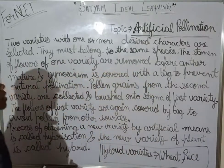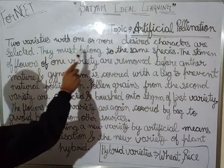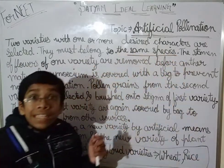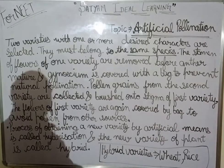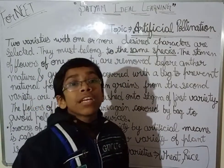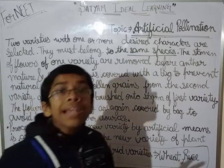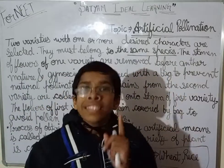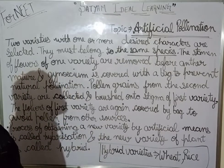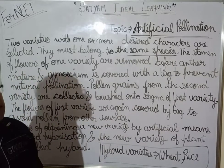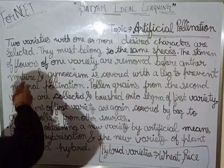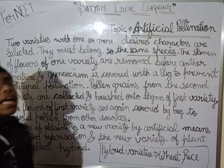They must belong to the same species — this is the most important thing. The two varieties of plant should belong to the same species and they should have one or more desired characters. Now, the stamen of the flowers of one variety will be dealt with.